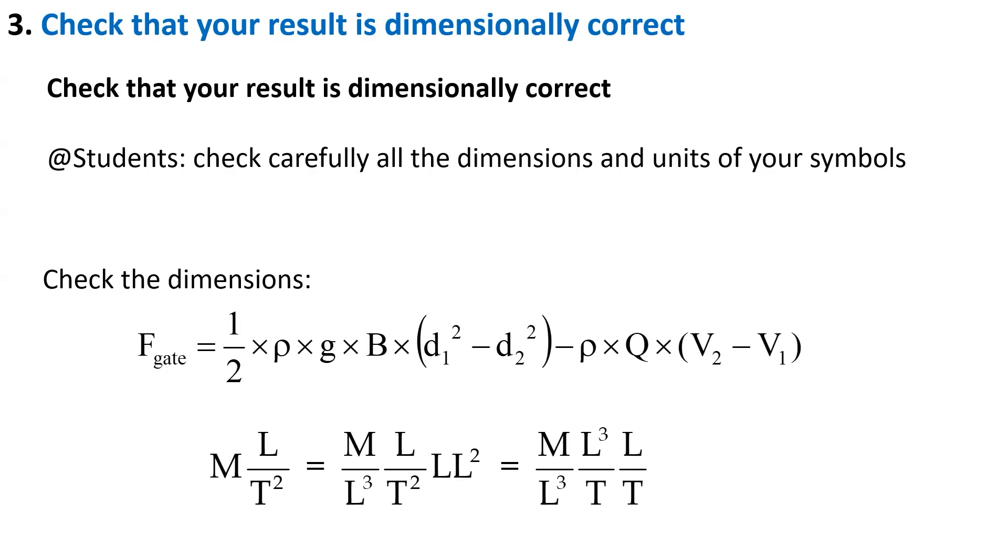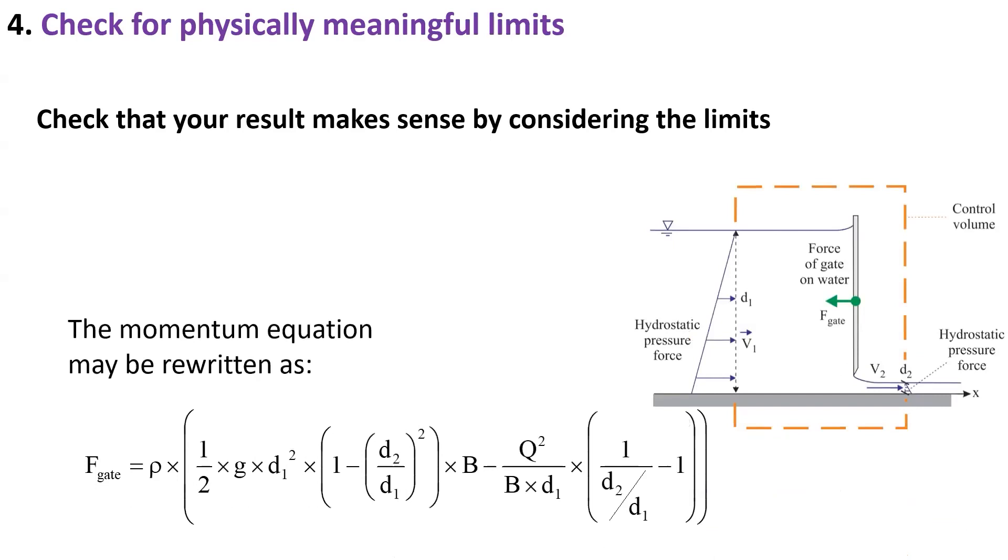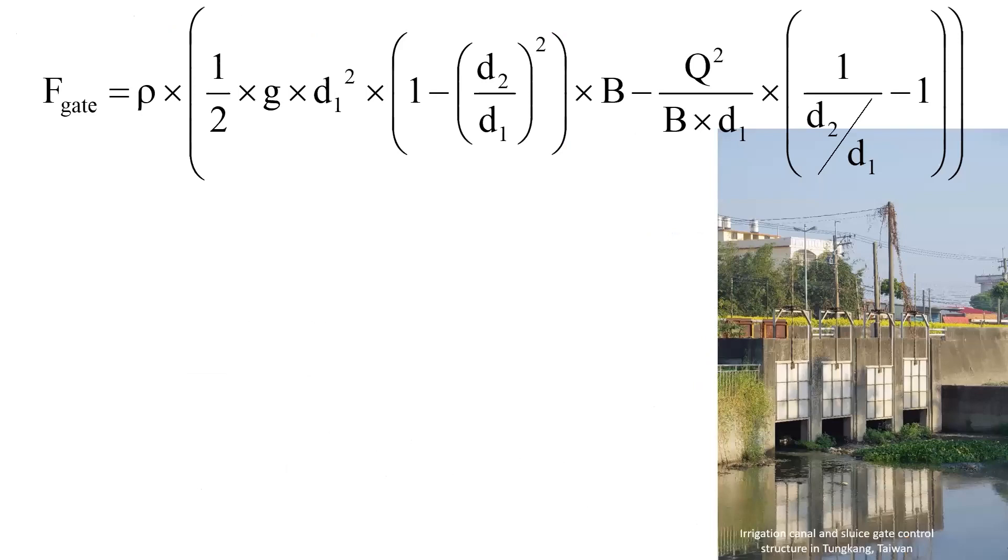Then we need to check for physically meaningful limits to make sure that our result in symbolic form makes sense. So here we are going to slightly rewrite our expression and check the limits for a very wide channel, a very narrow channel, for a very high water depth, and what happens when the density increases.